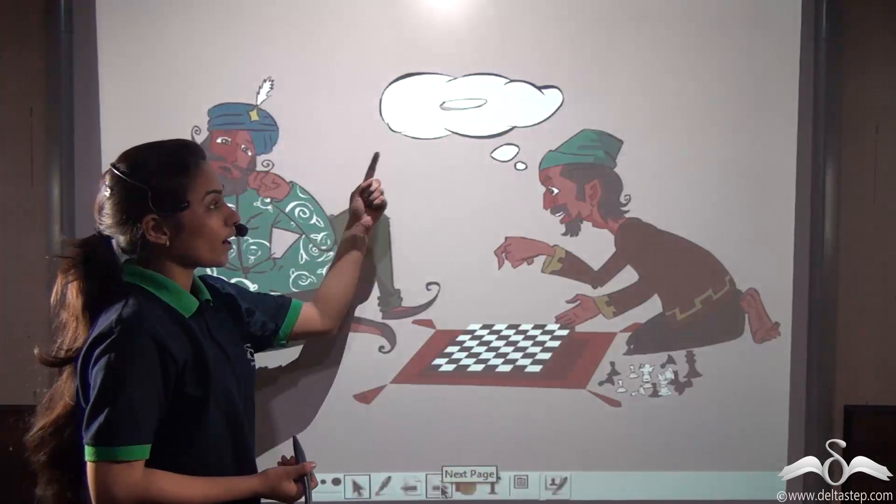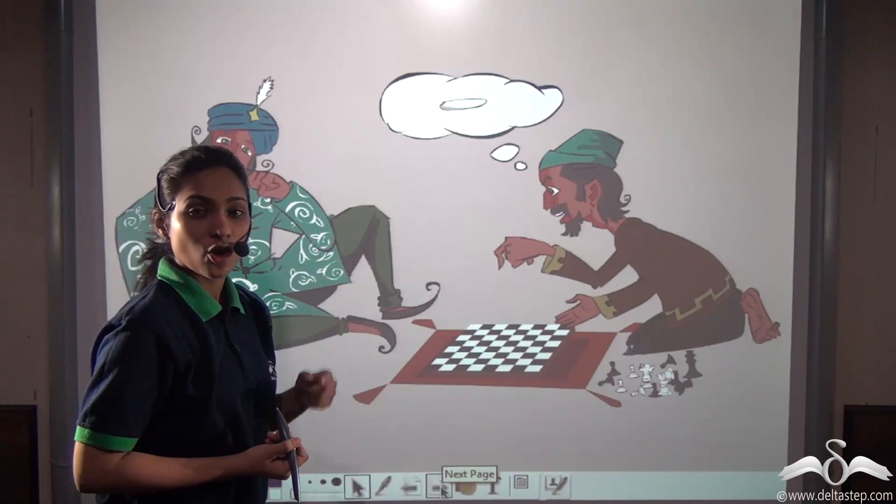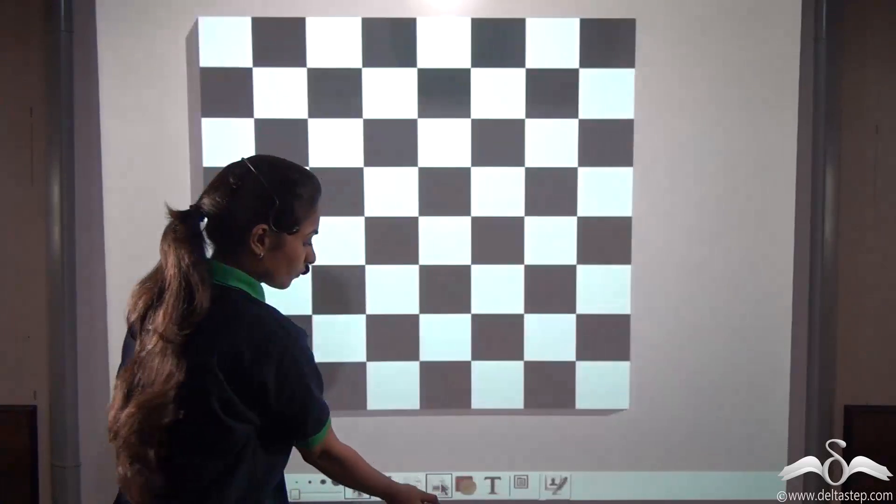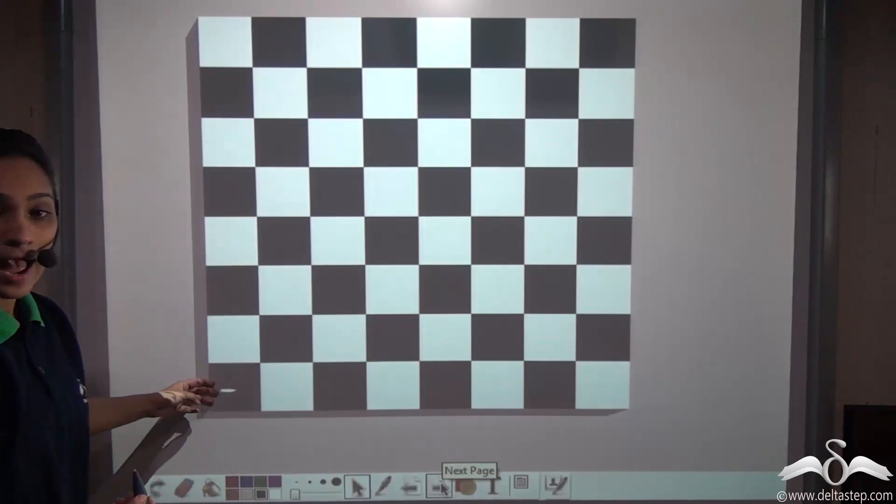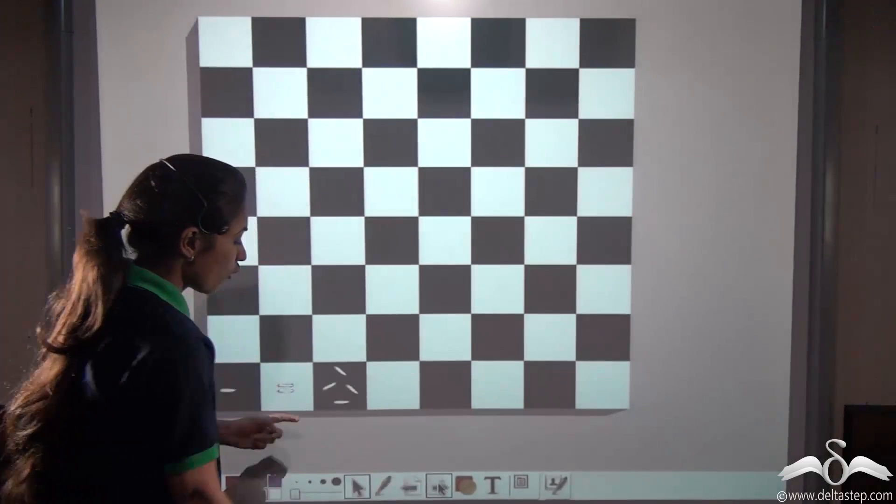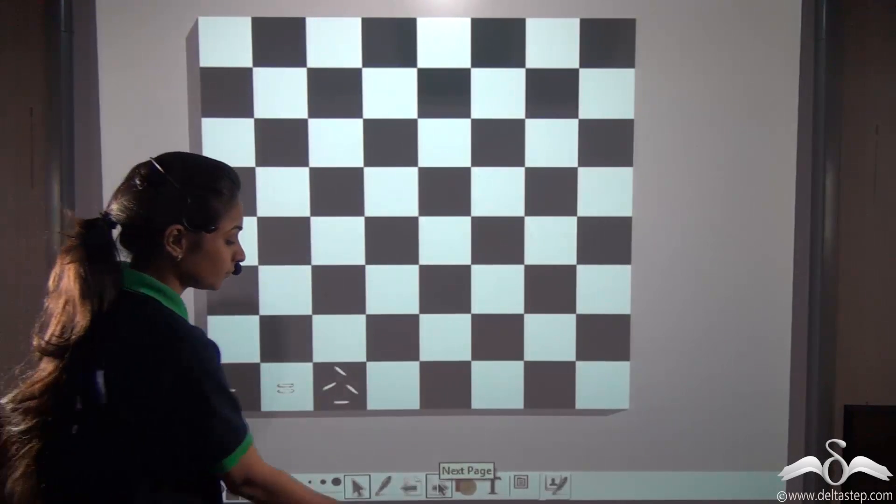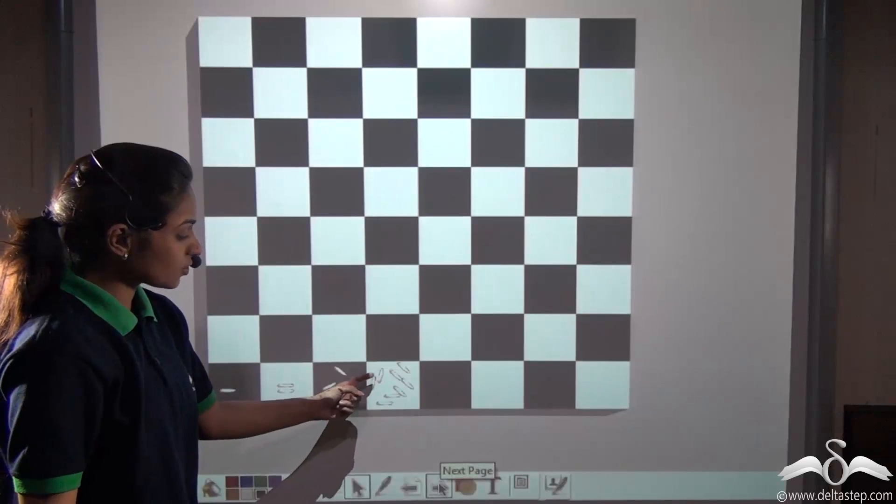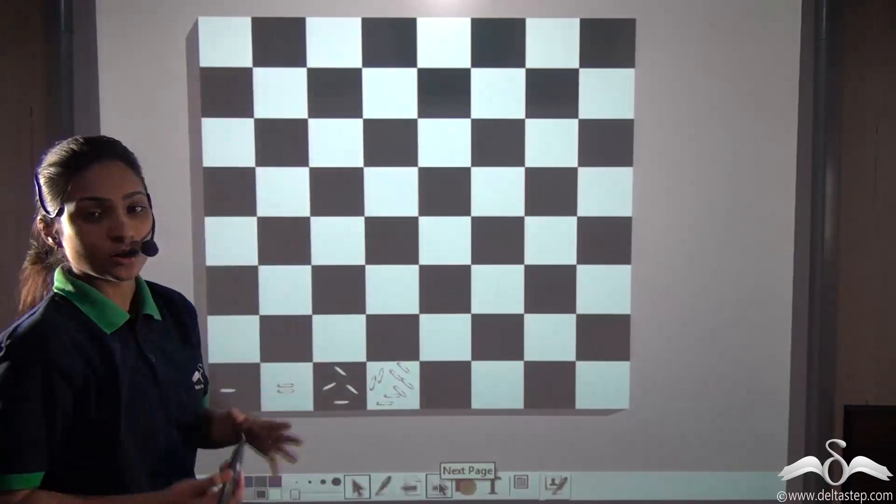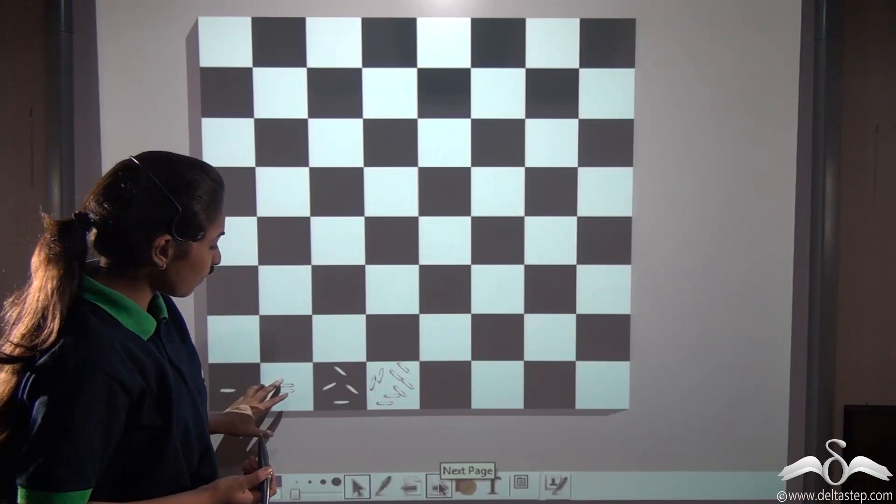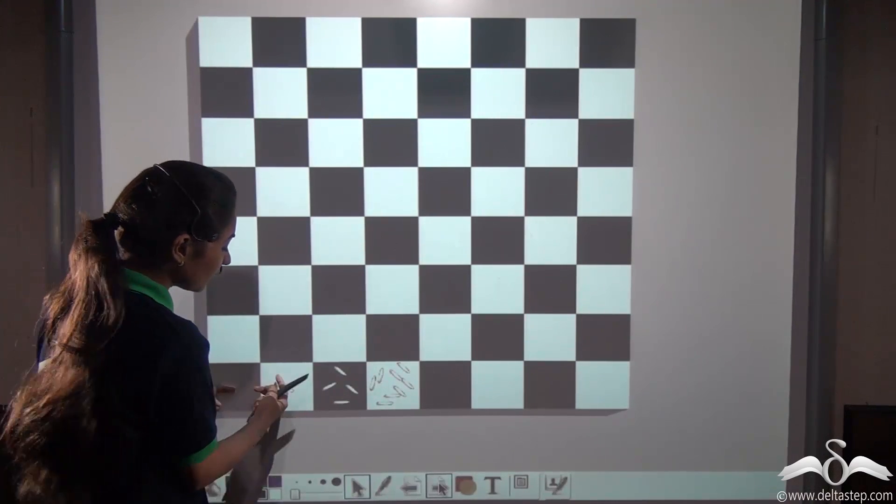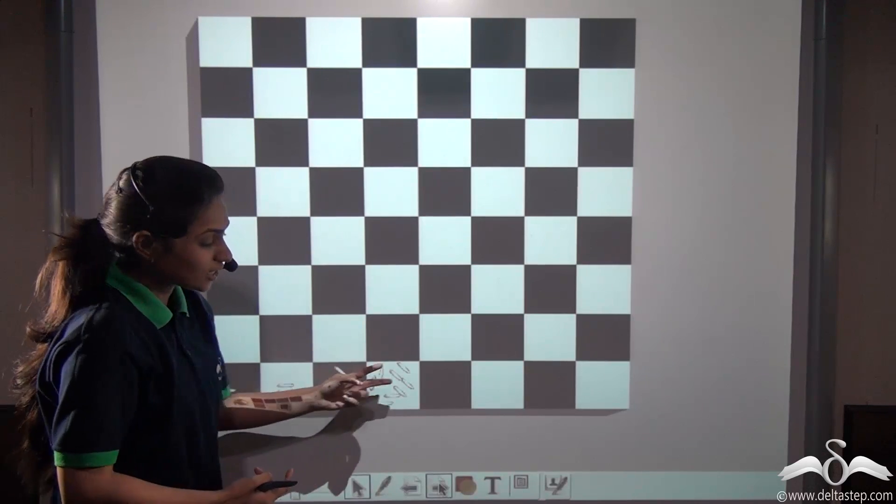He said that one grain of rice should be placed on the first square of this chessboard. Then two grains of rice on the next, four grains on the third, eight grains on the fourth and so on till the sixty-fourth square. Well, can you see there is a pattern he is following here? What is he doing? He is doubling the number of grains of rice in each square.